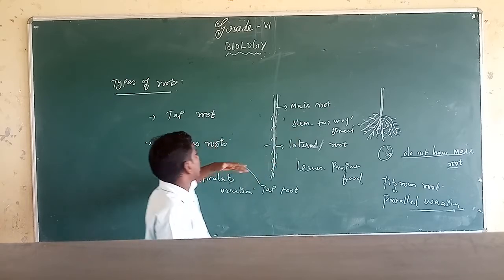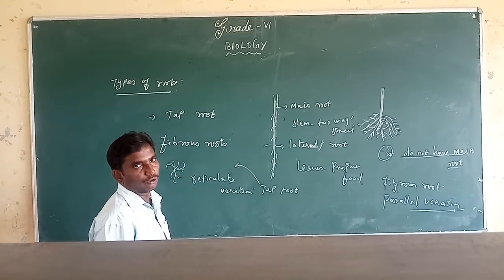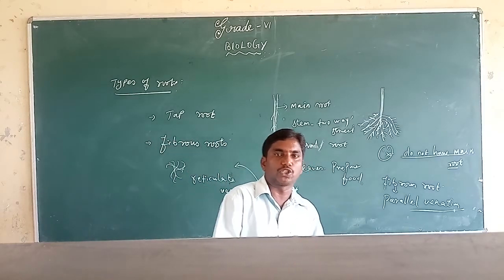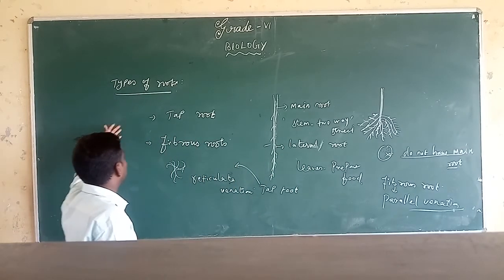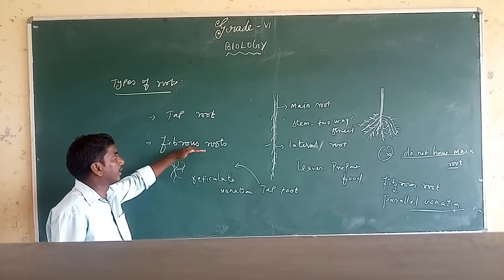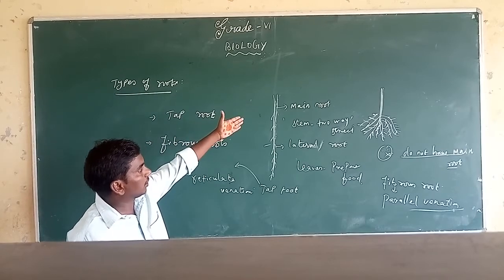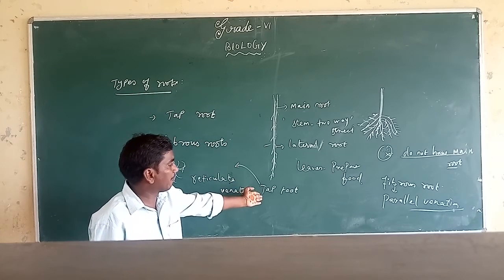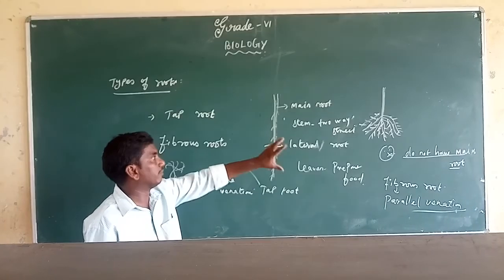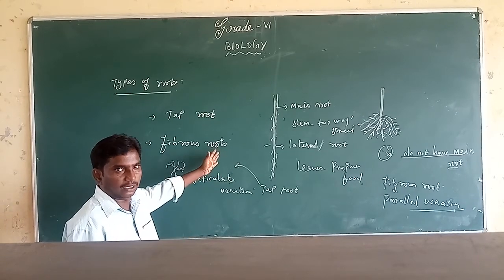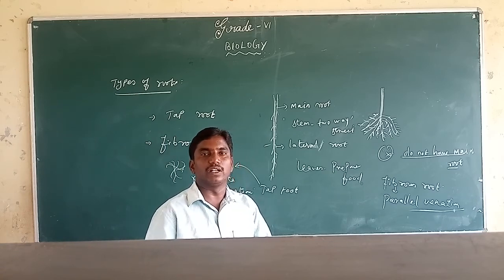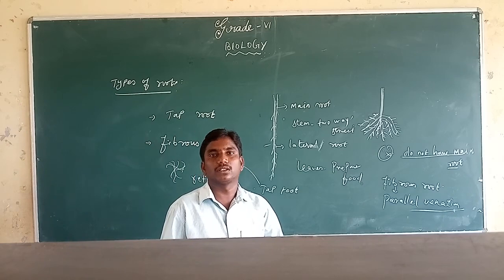So in this class we discussed about the types of root — tap root and fibrous root. The tap root has a main root and the fibrous root does not have any main root. That is the very easy lesson. The root topic is over and next class we will discuss about the flower. Thanks friends.